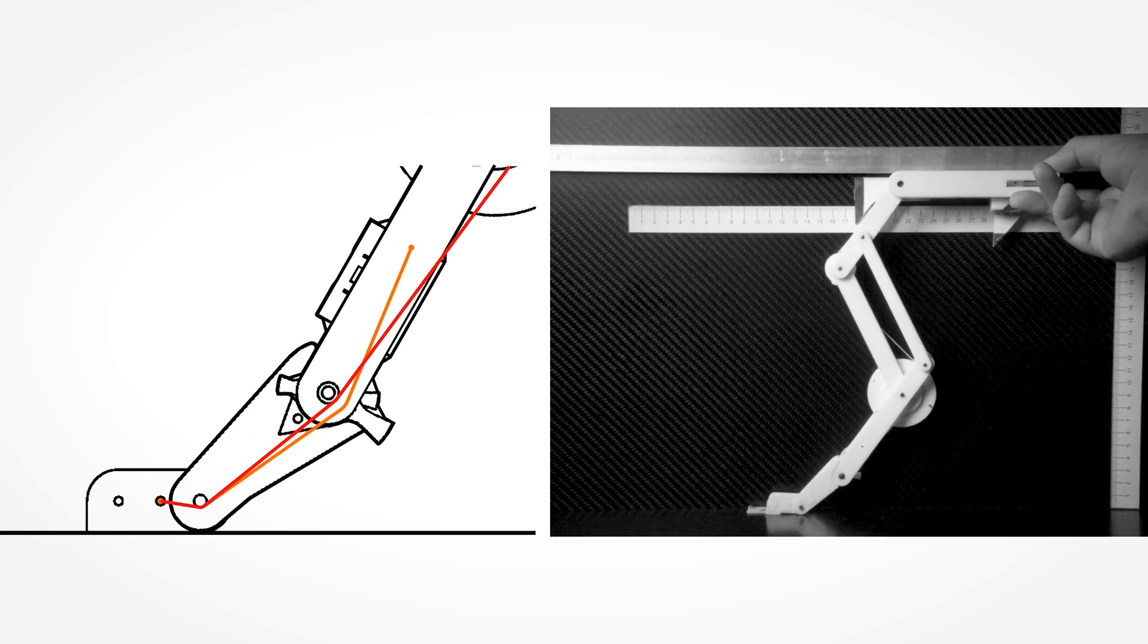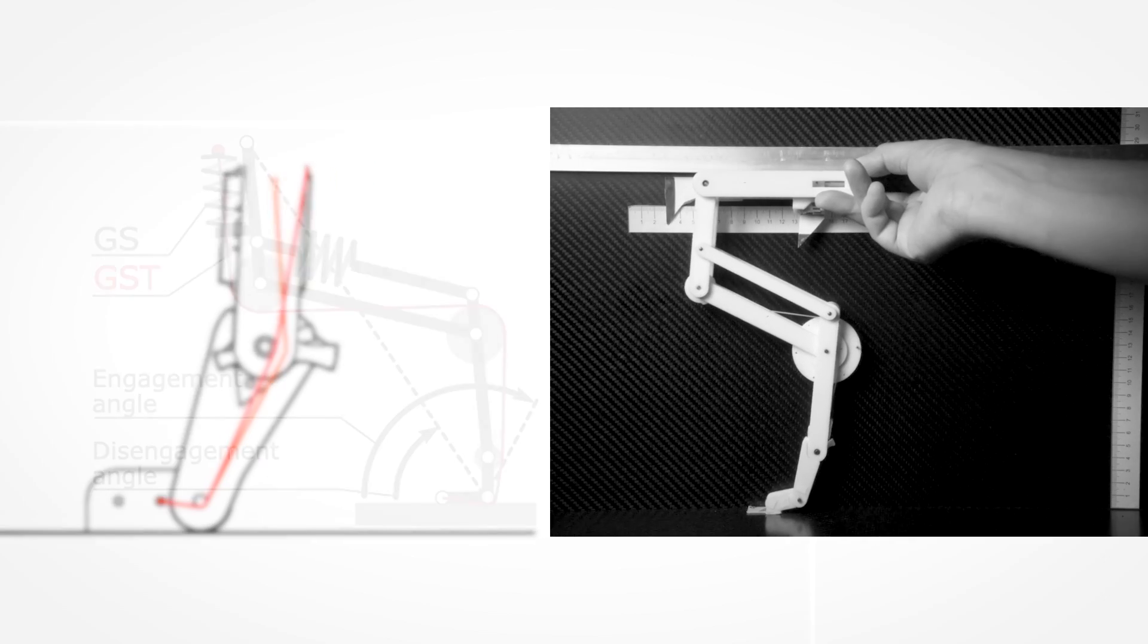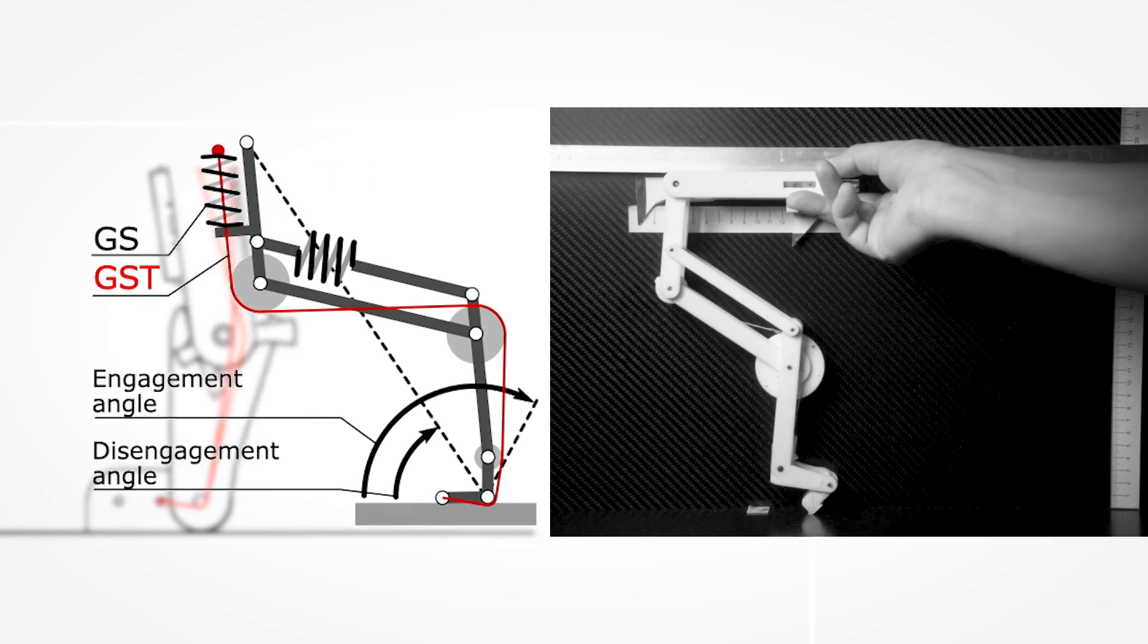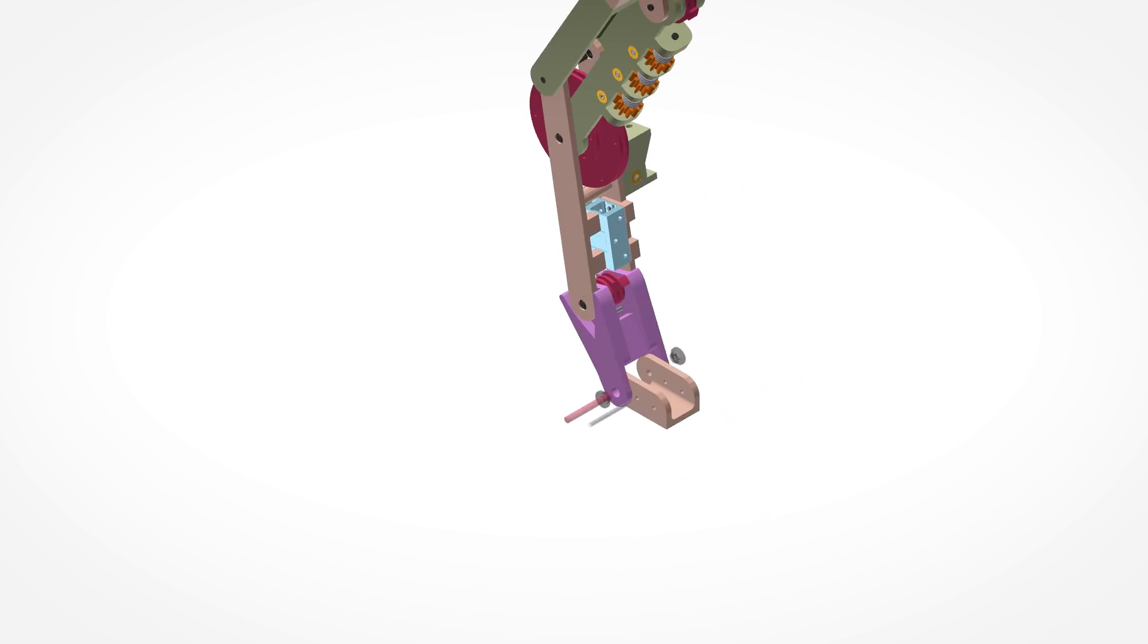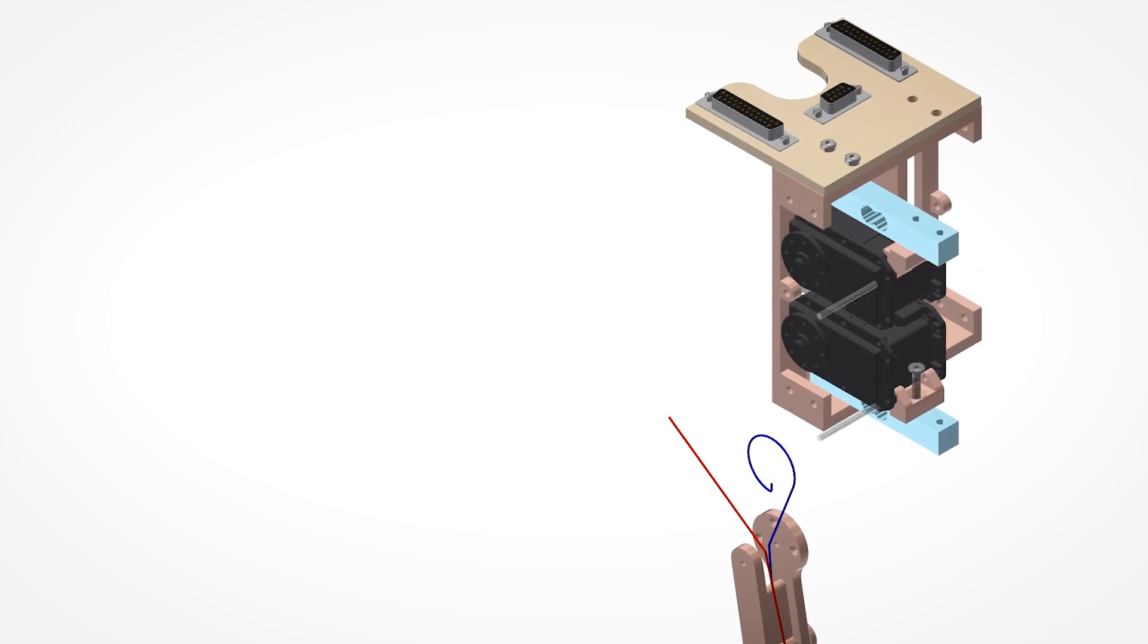They built BirdBot with such a coupled mechanism. The foot has no motor, but a spring-tendon-equipped joint. The foot is mechanically coupled to the rest of the leg joints via cables made of tendons and pulleys.